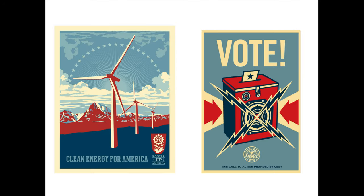These are more of Shepard Fairey's poster designs. On the left we see one about clean energy — a very graphic image referencing Russian propaganda posters, with a very minimal color scheme. At the bottom it says Clean Energy for America, and the subtitle says Power Up America. On the right he has a poster about voting — it says Vote, with a ballot box that says this call to action provided by Obey, his organization Obey Giant. So it's Shepard Fairey telling you to go vote.